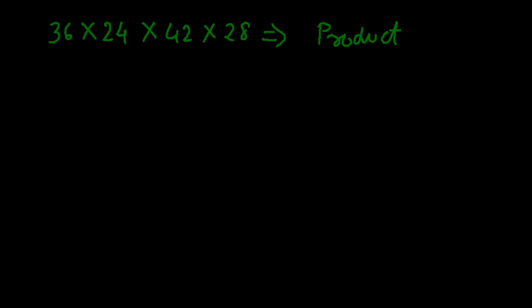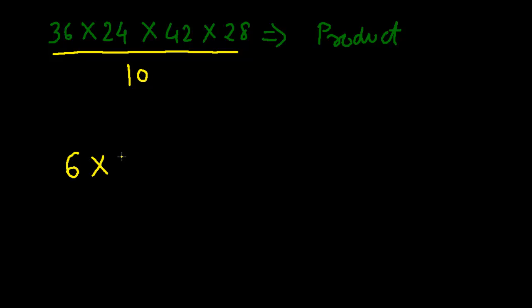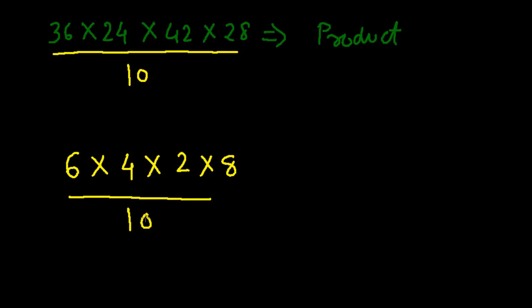So we need a shorter method that is more efficient and quick. Simply divide the entire expression by 10. Now replace each number with the remainder obtained when you divide that particular number by 10. 36 divided by 10 gives remainder 6. 24 divided by 10 gives remainder 4. 42 divided by 10 gives remainder 2. 28 divided by 10 gives remainder 8. And this product is again divided by 10.